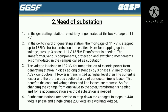Next, we come to the need of substation — what is the need of substation and where can it be installed? In the generating station, electricity is generated at the low voltage of 11 kV. In the switchyard of the generating station, the voltage of 11 kV is stepped up to 132 kV for transmission to cities. For stepping up the voltage, a step-up three-phase 11 kV to 132 kV transformer is needed. The transformer, its various components, protection and switching mechanisms, are accommodated in the campus called a substation.